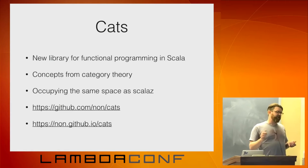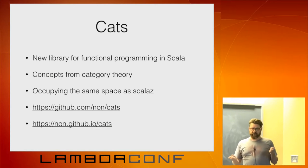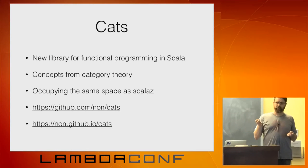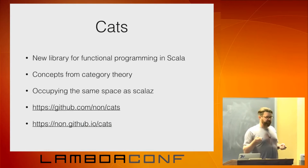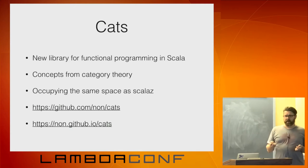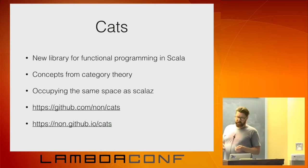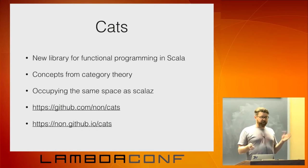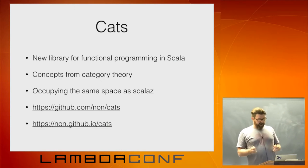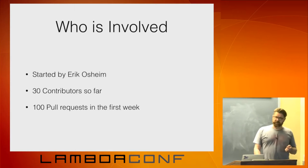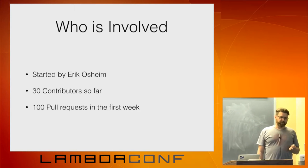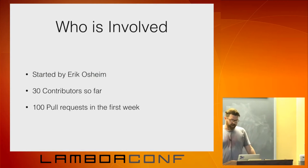Cats is another library which is trying to occupy the same space as ScalaZ — doing the things we're hoping it's going to be a library you'd use at times when you might use ScalaZ. So it's there to enable pure functional programming in Scala. It's a project that was recently started, a couple months old now. It was started initially by Eric Osheim, who is well known for being one of the primary authors of the Spire project, and also algebra and lots of other great stuff in Scala.